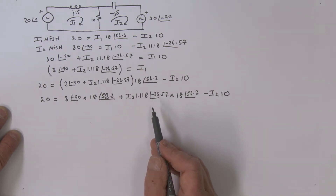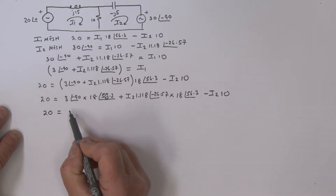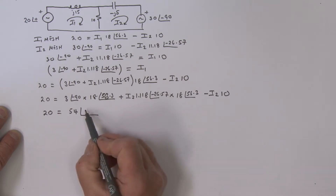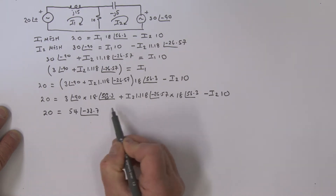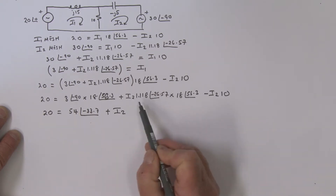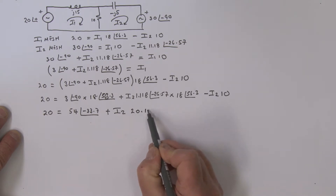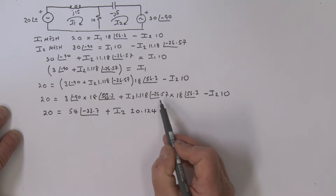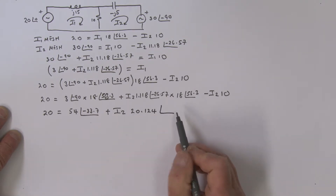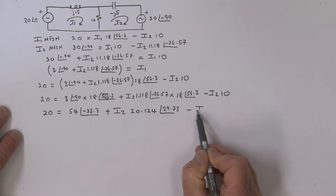So we have 20 equal to: multiplying out, we get 54 at angle minus 33.7 — that's minus 90 plus 56.3. Then plus i2 times 1.118 multiplied by 18 gives 20.124, and the angle is minus 26.57 plus 56.3, which gives 29.73. And the last term is minus i2 times 10.